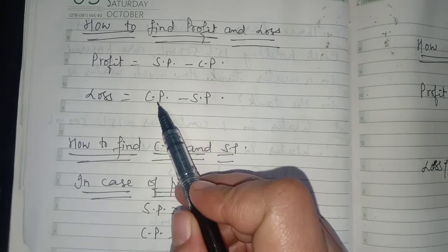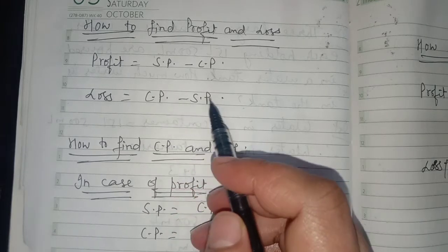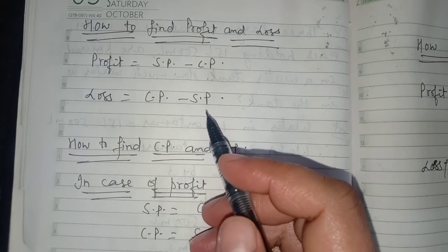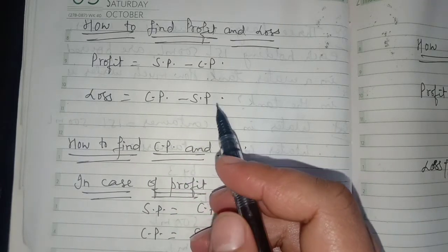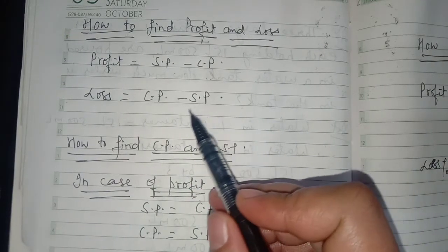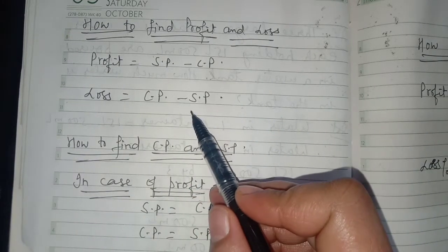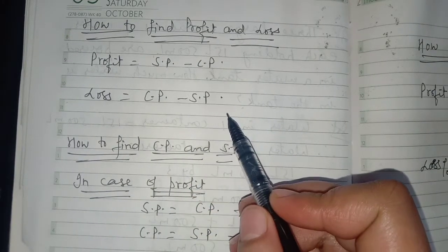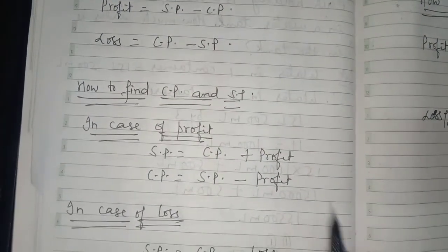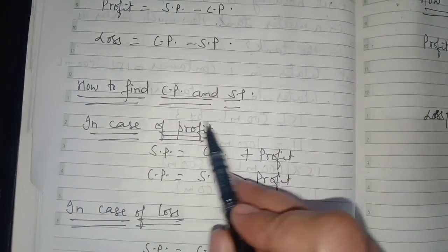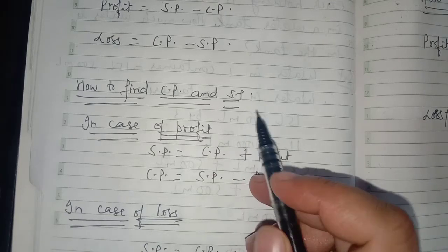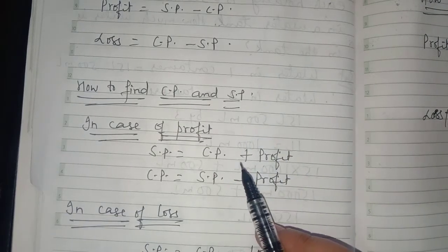What is the formula for finding loss? It is CP minus SP — when cost price is more than the selling price, we use the formula: Loss = CP minus SP.